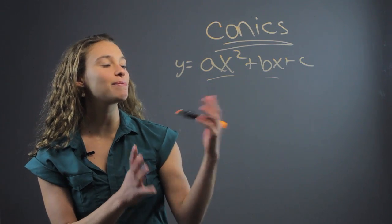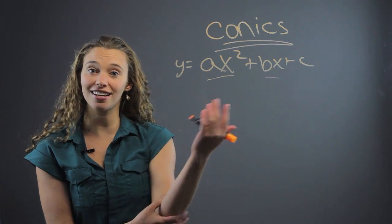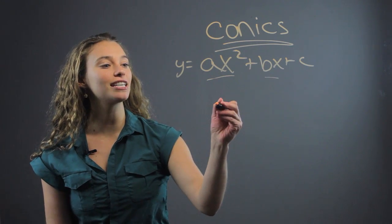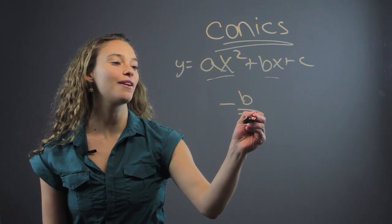You can also have a problem where it'll say, what is the vertex of this shape? So, let's look at that kind of problem. The vertex is equal to negative b over 2a.